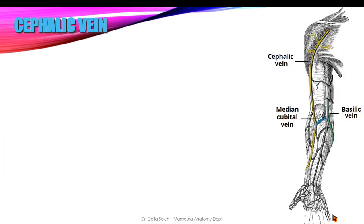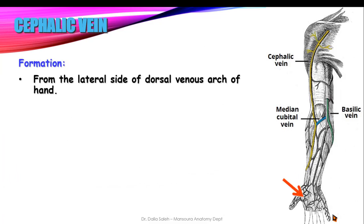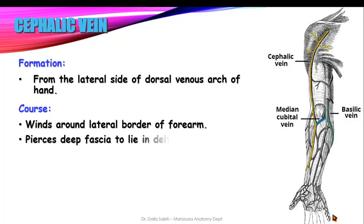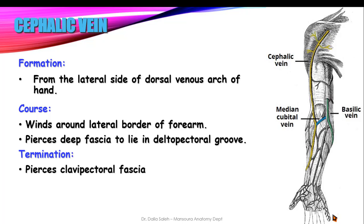The cephalic vein is formed from the lateral side of the dorsal venous arch of the hand. It winds around the lateral border of the forearm and ascends on the lateral side of the cubital fossa and lateral side of the arm. It then pierces the deep fascia to lie in the deltopectoral groove, and terminates by piercing the clavipectoral fascia to end at the axillary vein.